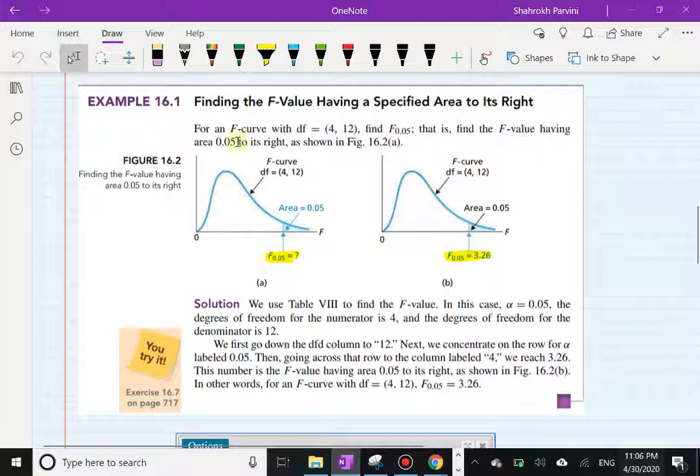In this example we want to find the F value right here. So this is an F curve, an F distribution with degrees of freedom in the numerator 4, denominator 12. And we want to find the F so that the area to the right is 0.05.